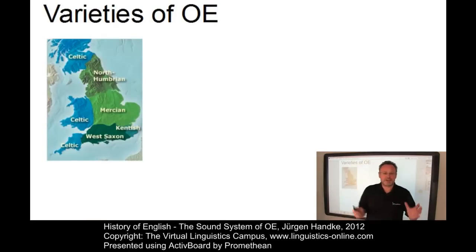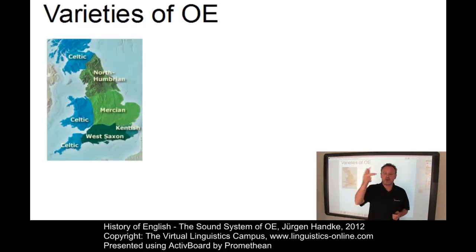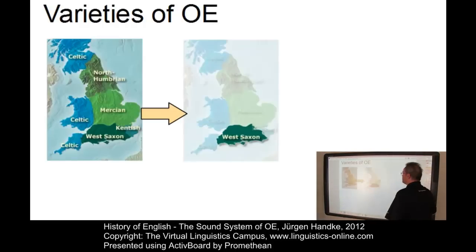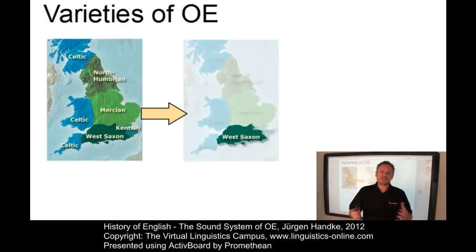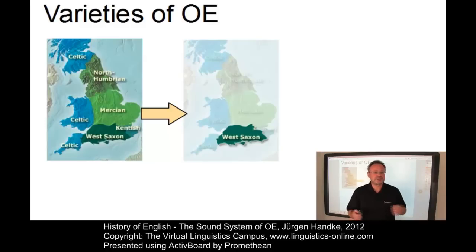Surviving texts from the Old English period occur in four main varieties: West Saxon, Kentish, Mercian and Northumbrian. Towards the end of the Old English period, the West Saxon kingdom, Wessex, became dominant and the West Saxon variety became the literary standard. Thus, most scholars treat West Saxon as the leading variety of Old English.